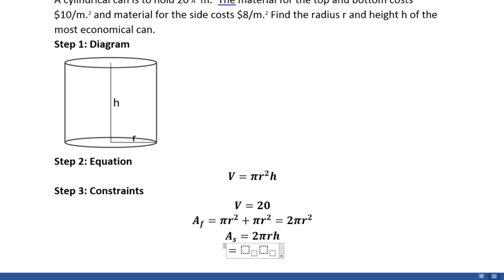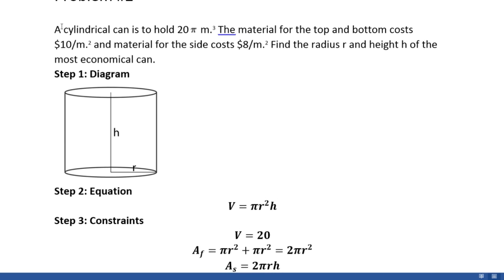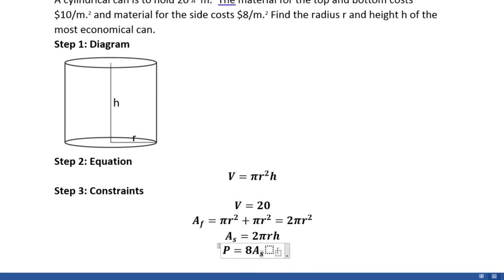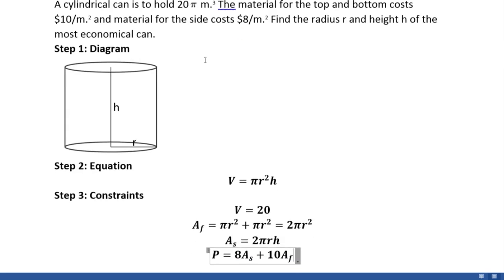Lastly, we have the constraint for the total cost of the can. We'll use P to represent the price. So P will be equal to 8 times A_s plus 10 times A_f — that's 8 times the area of the material on the sides, plus 10 times the area of the material on the faces, which gives us the total cost in accordance with the prices given in the question.